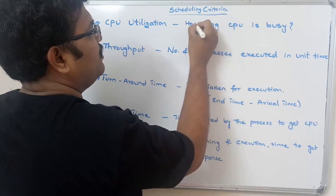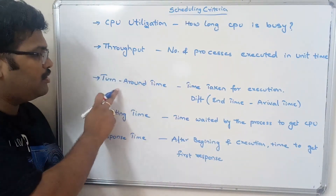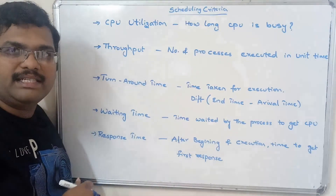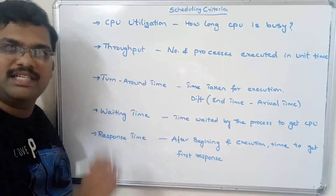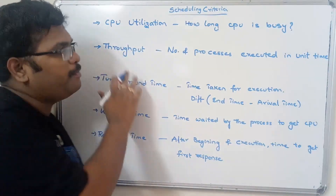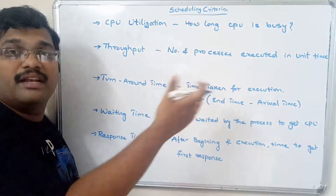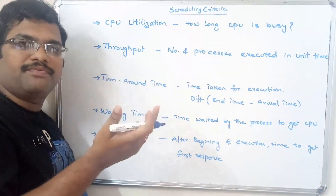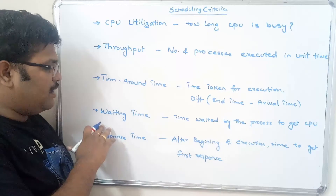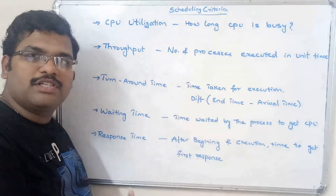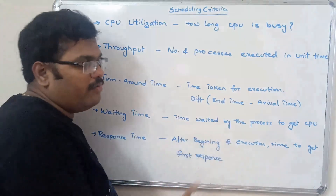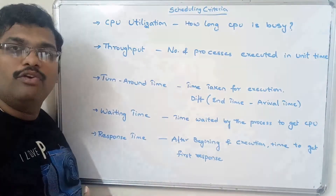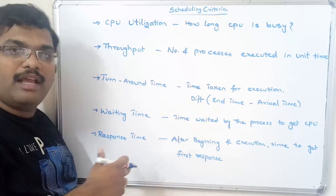So these are the different scheduling criteria: CPU utilization, throughput, turnaround time, waiting time, and response time. For every process we can calculate all of these except CPU utilization. CPU utilization is how long the CPU is busy; throughput is the number of processes executed in a given time period; turnaround time is the difference of completion time and arrival time; waiting time is the time waited by the process to get the CPU; and response time is the time to get the first response after beginning of execution. All of these are handled by the short-term scheduler.